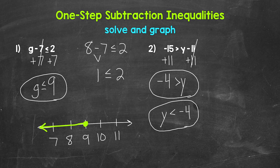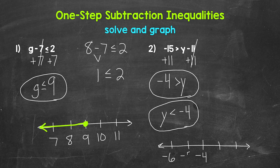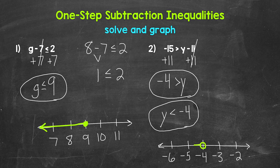Now we're ready to graph. Start with a number line and put negative 4 in the middle with numbers on both sides: negative 6, negative 5, negative 4, negative 3, negative 2. Y is less than negative 4 — we are not including negative 4, so we need an open circle at negative 4. Y is less than negative 4, so our arrow goes left towards all values less than negative 4. That's our graph.